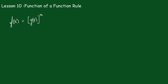Less than 10 — the function of a function rule. This is an adaptation of the chain rule, just to speed things up a little bit.